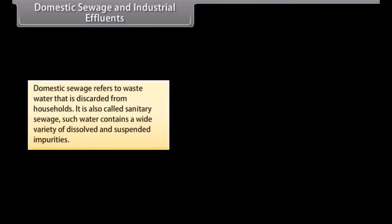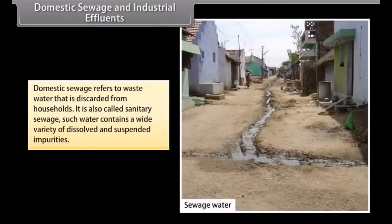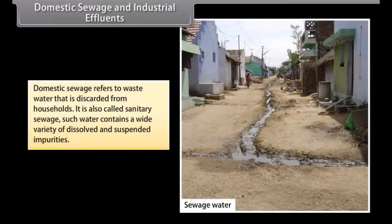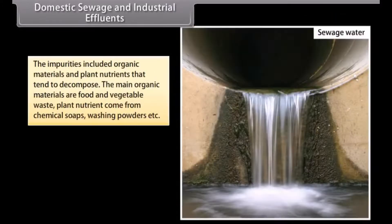Domestic sewage refers to waste water discarded from households, also called sanitary sewage. Such water contains a wide variety of dissolved and suspended impurities, including organic materials and plant nutrients that tend to decompose.